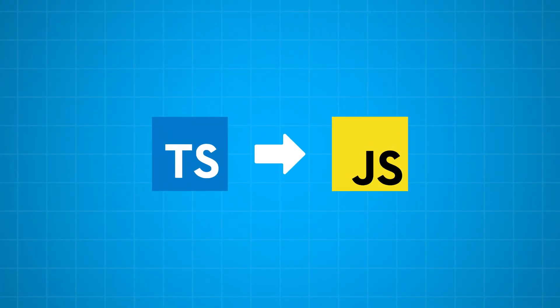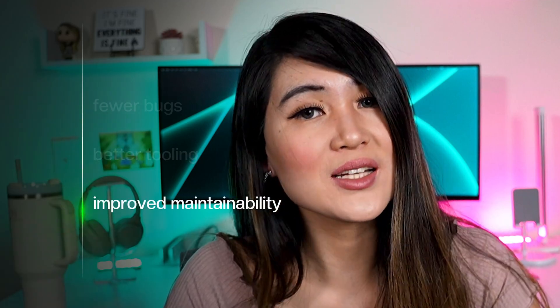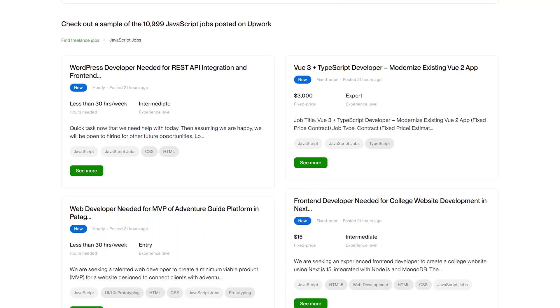The first language I coded in at Google was actually TypeScript. One of TypeScript's biggest strengths is how it scales with growing projects, making it easier to maintain, refactor, and onboard new team members. However, there are cons too — it comes with a learning curve as it introduces new concepts on top of JavaScript, and there's the added step of compiling TypeScript into plain JavaScript since browsers don't understand TypeScript natively. Still, many developers find that the long-term benefits — including fewer bugs, better tooling, and improved maintainability — far outweigh the initial overhead.